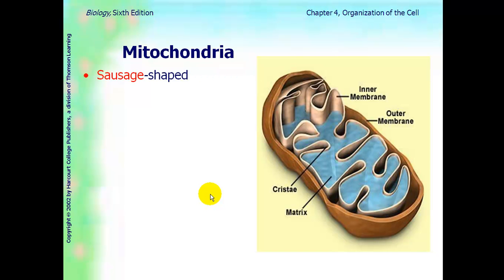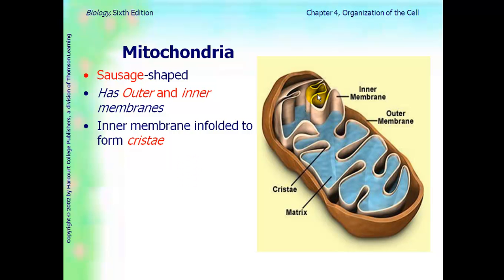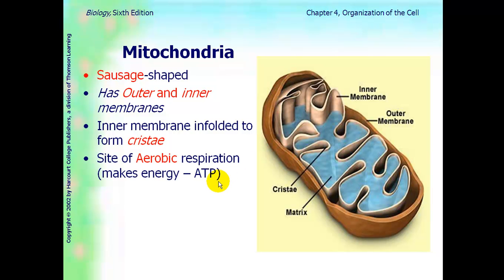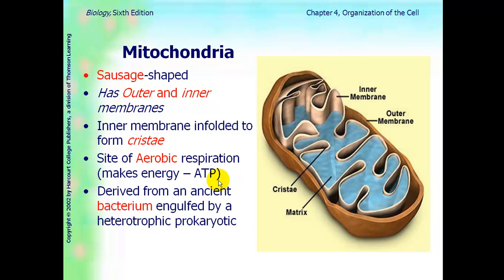Mitochondria is sausage-shaped. It has outer and inner membranes. The inner membrane is called the cristae, and it has folding within the mitochondria. This is where aerobic respiration takes place — which means it is making energy — which you probably learned as the powerhouse of the cell. It is derived from an ancient bacteria that was engulfed by a heterotrophic prokaryote. Mitochondria actually contains its own DNA and can replicate on its own.